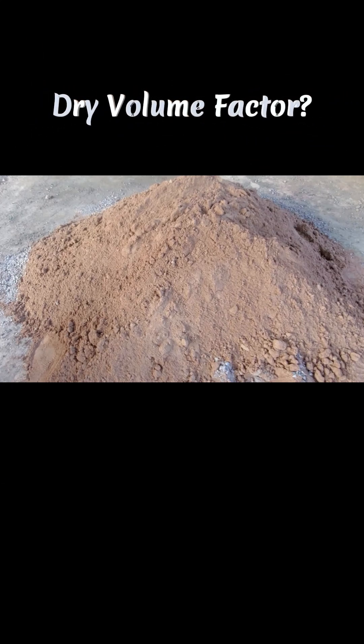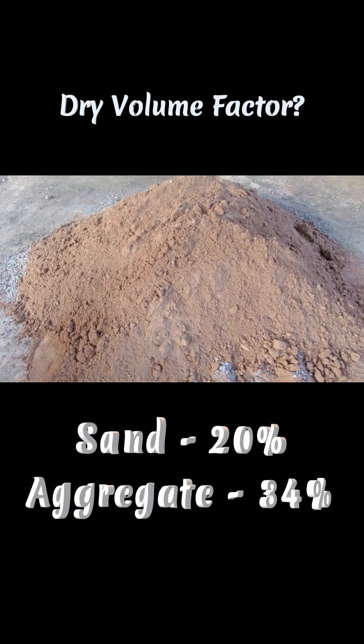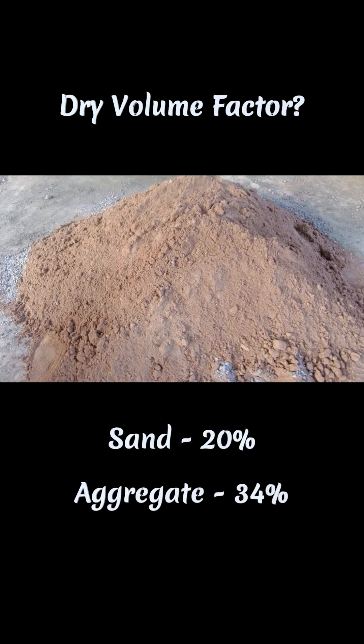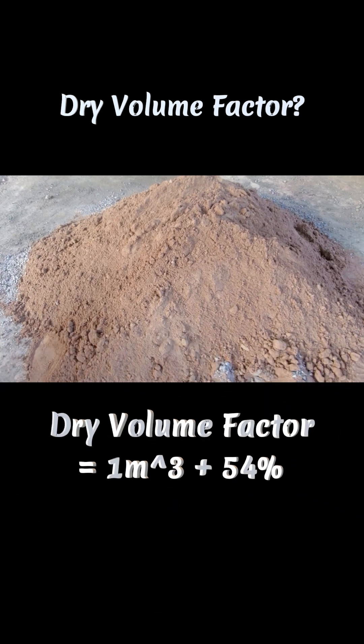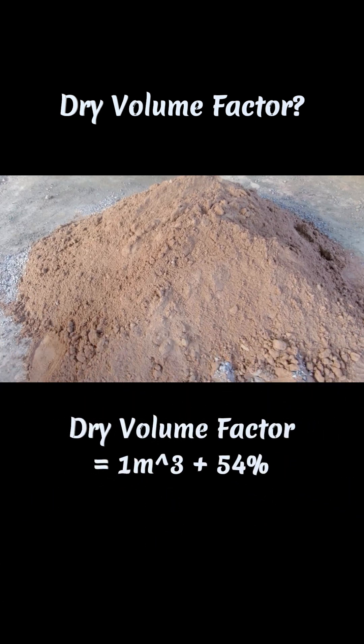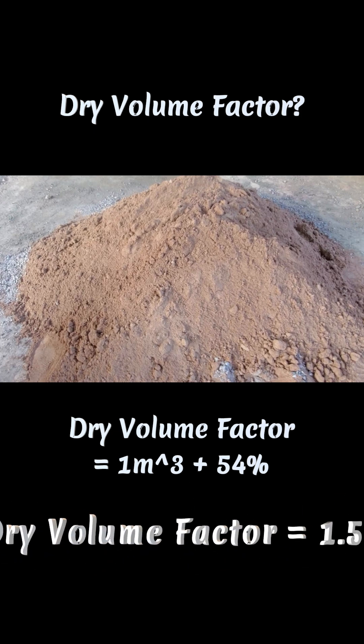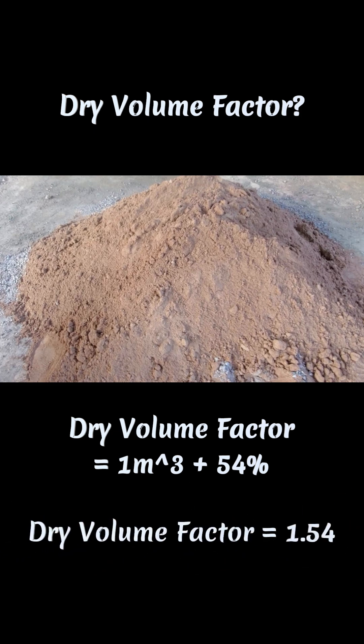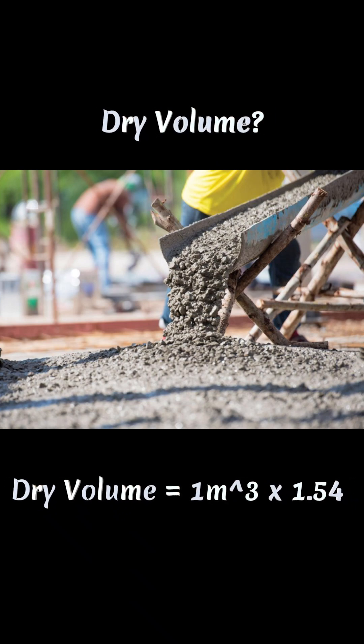First, let's consider the dry volume. The dry volume factor is 1.54. When we mix water with the dry ingredients, the volume gets reduced because of the air voids present in the material. The air voids in cement are negligible, in sand it's 20%, and in aggregate it is 34%. So the dry volume factor equals 1 meter cube of wet volume plus 54% of voids present in the material.